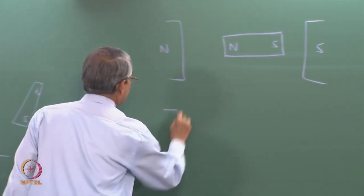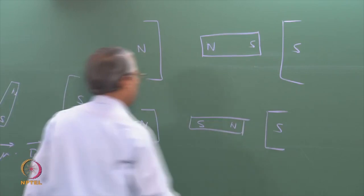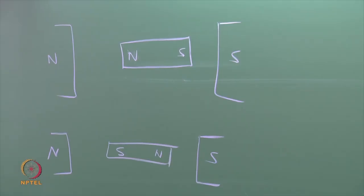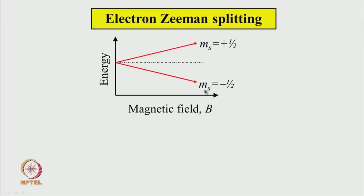The higher energy configuration corresponds to m_s equal to minus half, and the lower energy arrangement corresponds to m_s equal to plus half. This is shown in the energy level diagram — for electron spin in a magnetic field, there are two energy levels characterized by m_s equal to minus half or plus half. This is the electron Zeeman splitting. The energy difference between these two states depends on the strength of the magnetic field — small field gives small splitting, large field gives large splitting — and the splitting changes linearly with magnetic field.